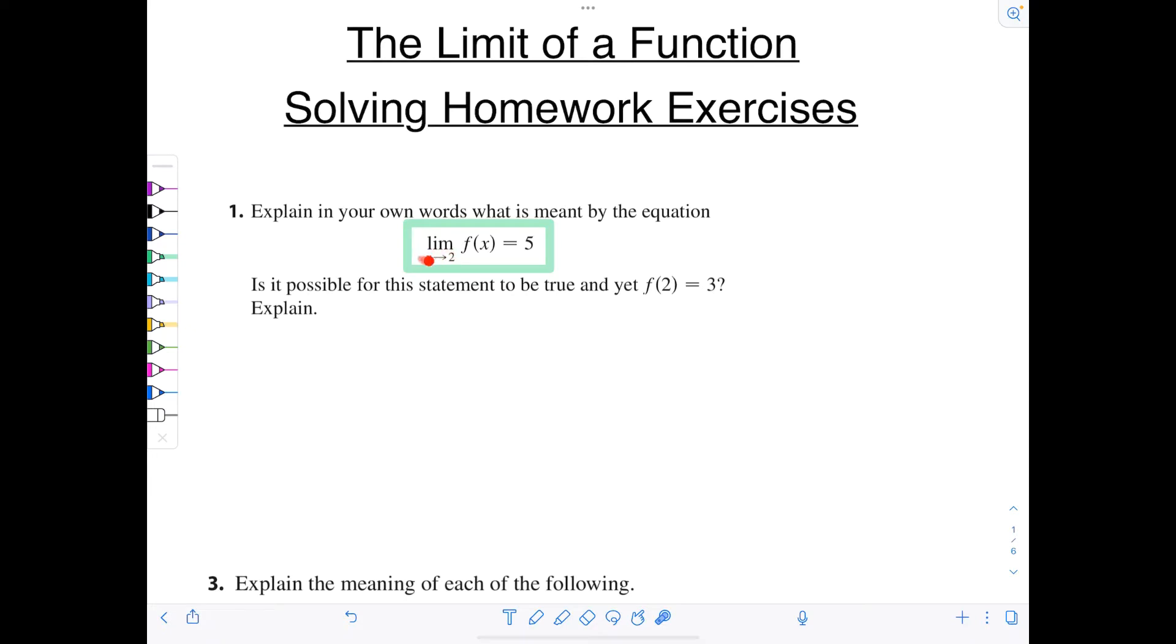Underneath the limit, that's what the x value is approaching. So on your graph, as x values get close to 2, f of x, y values get close to 5. So you could think about it like this as x gets close to 2, f of x or y values get close to 5. How we define close we'll do very precisely later on in the chapter.